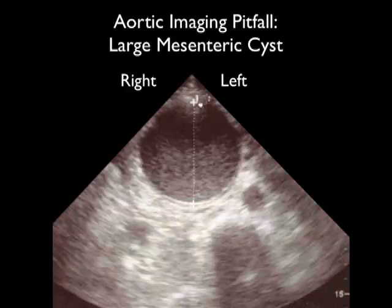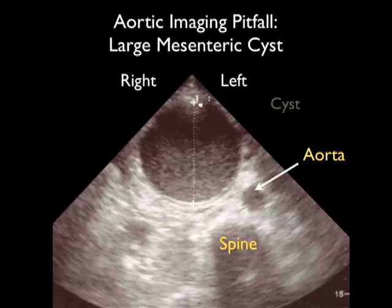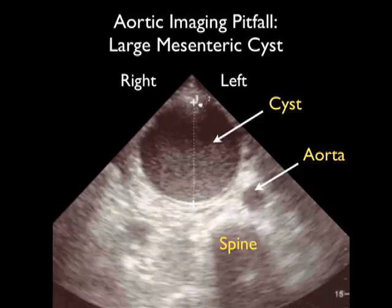This ultrasound image shows another interesting pitfall. At first glance, we see a very large dark structure towards the top of the picture that could be mistaken for a very large abdominal aortic aneurysm. However, close attention to the spine posteriorly will help — notice the bone table of the spine, and just anterior to it we can actually see the aorta. This very large structure is actually a mesenteric cyst, and it failed to demonstrate pulsations with color power Doppler.